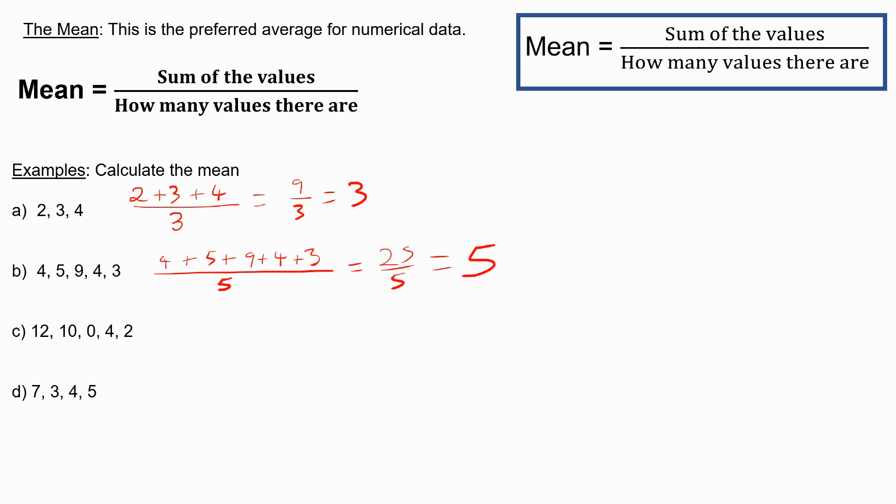For C, we do 12 plus 10 plus zero plus four plus two. And we have five values. That gives us 16, 26, 28 over five, which is going to be five and three-fifths, or you could say 5.6.